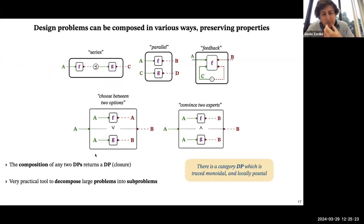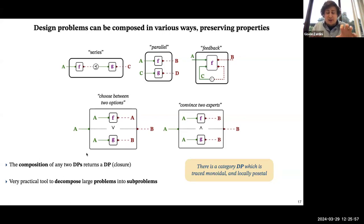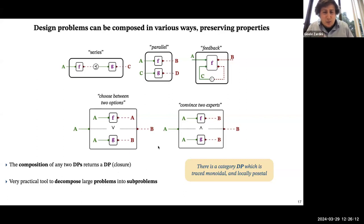The important thing is that with this notion of feasibility, you're able to embed this knowledge into your design process. The reason I really like this tool is that not only is it clear what a design problem is, but it's clear how to take multiple design problems and interconnect them — I can put them in series, in parallel, I can have a feedback operation, I can be choosing between two options. The composition of any two design problems returns again a design problem, giving a closure property. This becomes a very practical tool when I have a large problem made of many components that I want to decompose into the knowledge of subcomponents.